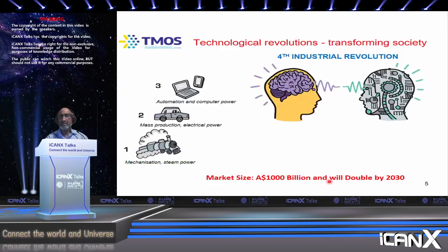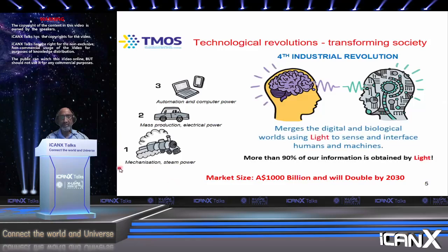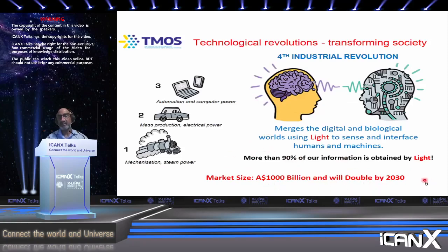Let me introduce you to the various industrial revolutions. The first started with steam power and mechanization; the second with electrical power and mass production; the third with computer power and automation. Now we are moving towards the fourth industrial revolution, where people are predicting that the digital world and biological world will come together, with human-machine interactions. Light is going to play an important role — 90% of our information is obtained by light. Light-based industries are currently about $1 trillion, and predicted to double by 2030.